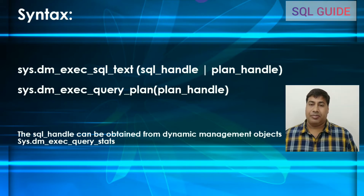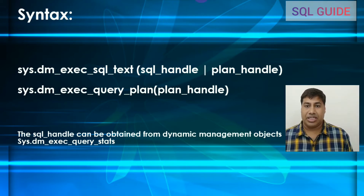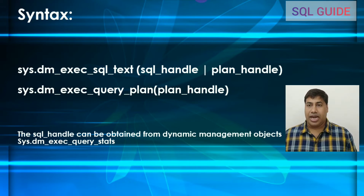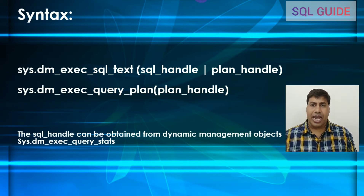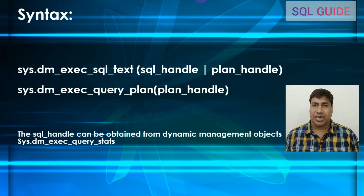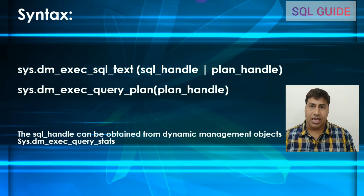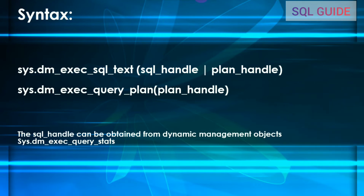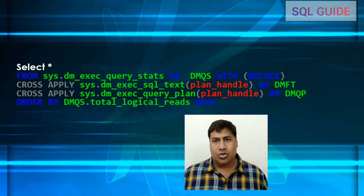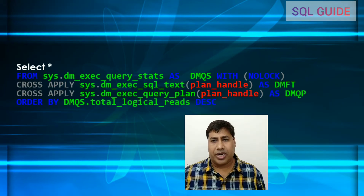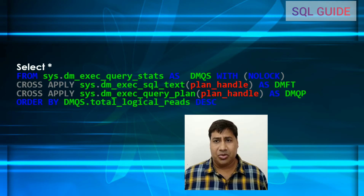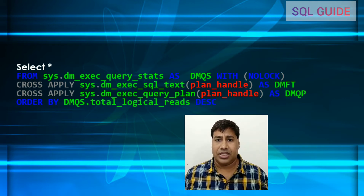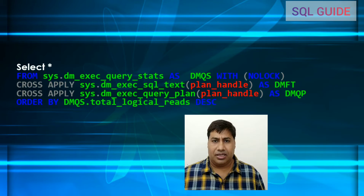This is the syntax of the dynamic management functions — sql_handle and plan_handle. The sql_handle can be obtained from the dynamic management object sys.dm_exec_query_stats. After joining the dynamic management view with the dynamic management functions, it will look like this.